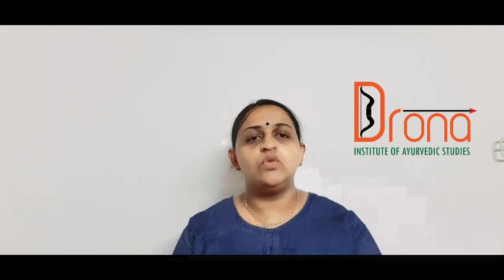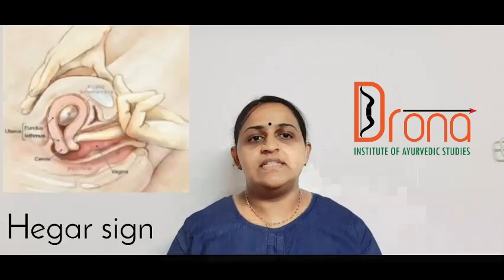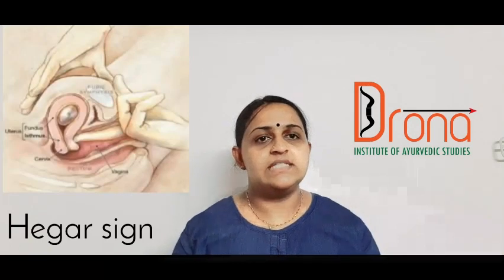Coming to uterine signs, Hegar's sign and Palmer's sign can only be elicited by bimanual examination — that is important. Hegar's sign is obtained due to softness of the lower uterine segment, and Palmer's sign is obtained due to rhythmic contractions of the uterus.